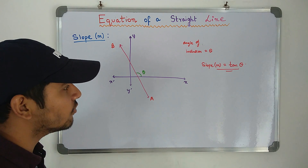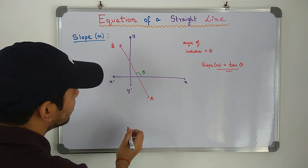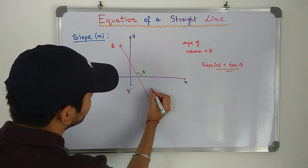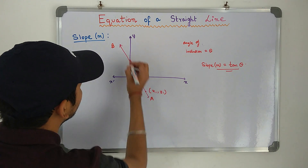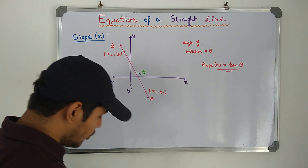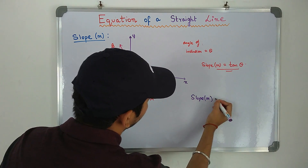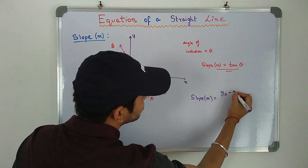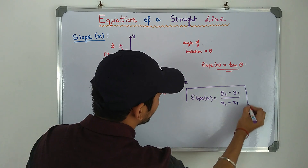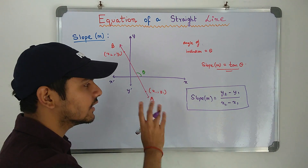There is also a formula for slope. If we have two given points lying on a straight line — say (x1, y1) and (x2, y2) — then the slope is equal to (y2 − y1) divided by (x2 − x1). This is the formula for slope when two points on a given straight line are known.